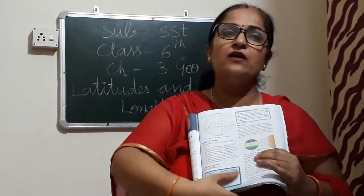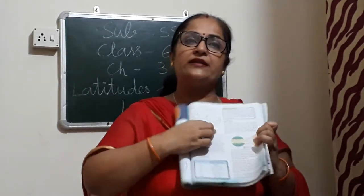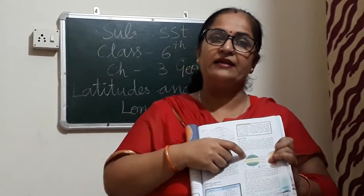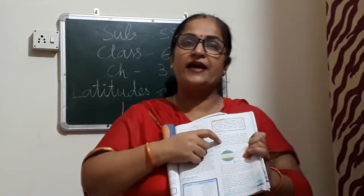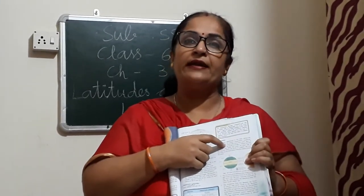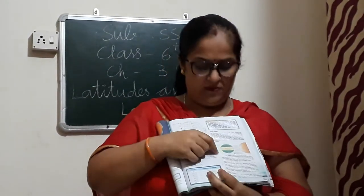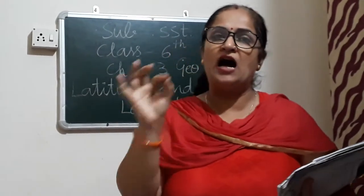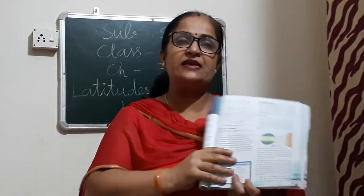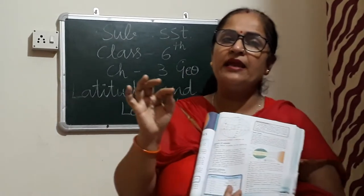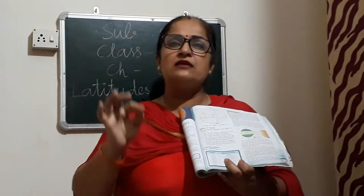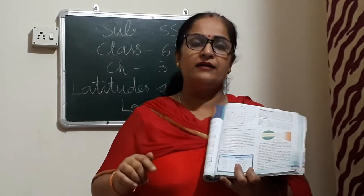This is called the Tropic of Cancer, and it is on 23 and a half degrees north. Then the green area is at 66 and a half degrees — this is the Arctic Circle. And upside at the poles, this is on 90 degrees — this is the North Pole. Same downside: this is the southern hemisphere. The yellow part downside is the Tropic of Capricorn, at 23 and a half degrees south. Then the green area is at 66 and a half degrees south — that is the Antarctic Circle. Then the blue area towards southward is at 90 degrees, and this is the South Pole.